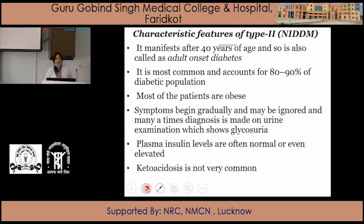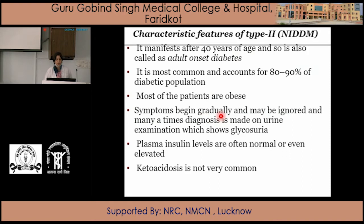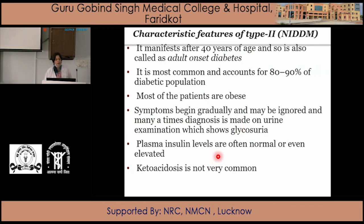The characteristic features of Type 2 or non-insulin dependent diabetes mellitus are that it manifests after the age of 40, so it is also called adult-onset diabetes. It is the most common type, accounting for 90% of the diabetic population, and most patients are obese. Symptoms begin gradually and may be ignored. Diagnosis is often made from urine examination — if glycosuria is present, the patient is diagnosed as diabetic. Plasma insulin levels are often normal or even elevated, and ketoacidosis is not very common, unlike in Type 1.